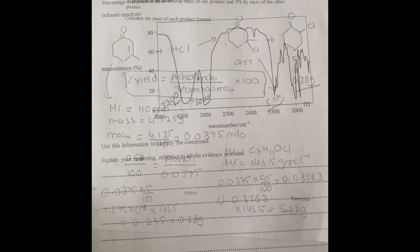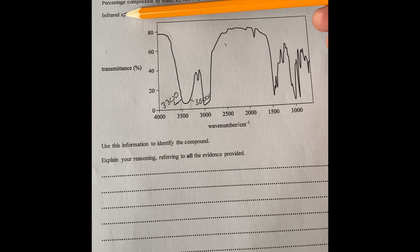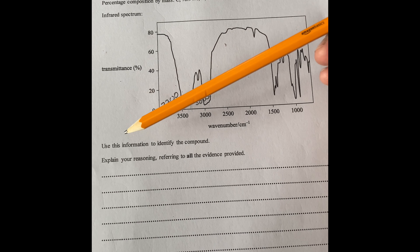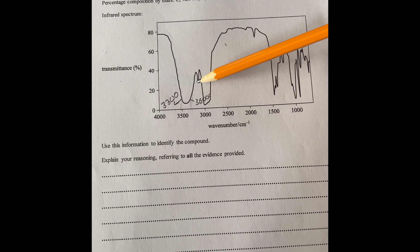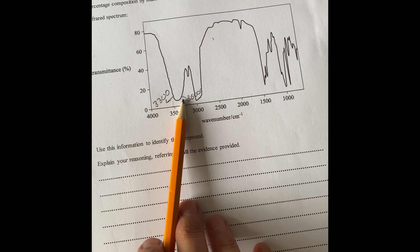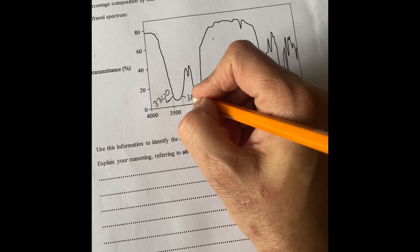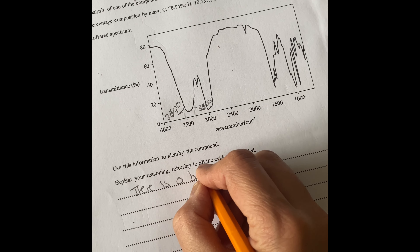The next question: analysis of one of the compounds A to E is shown — percentage composition by mass and an infrared spectrum. Use this information to identify the compound and explain your reasoning, referring to all evidence. Looking at the IR spectrum first, there's a broad peak between 3300 and 3600 cm⁻¹.